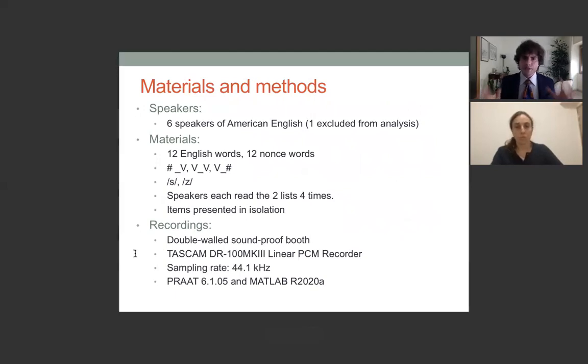We worked with six speakers of American English, one of them was excluded from analysis. We had 12 English words and 12 nonce words compatible with English phonotactics in all possible contexts at the left word edge, right word edge, and intervocalic. We worked with S's and Z's, and each of the speakers had to read the two lists four times. Each of the two lists was randomized in four different ways, and every item was presented in isolation. The recordings took place in a double walled soundproof booth at the LPP in Paris on a Tascam DR-100 MK3 linear PCM recorder at a sampling rate of 44.1 kHz. Our data were then exported into Praat for annotation and analysis and Matlab for filtering.